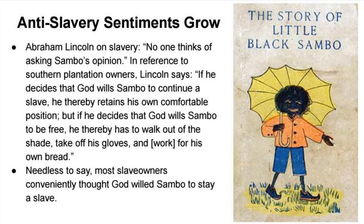Anti-slavery sentiments were growing. A children's book called Little Black Sambo was quite popular right through the civil rights movement. In the antebellum United States, the term 'sambo' just referred to Black slaves and wasn't considered a racist term at the time — even Abraham Lincoln used it, saying: 'No one thinks of asking Sambo's opinion. If he decides that God wills Sambo to continue a slave, he thereby retains his own comfortable position; but if he decides that God wills Sambo to be free, he thereby has to take off his gloves and work for his own bread.'